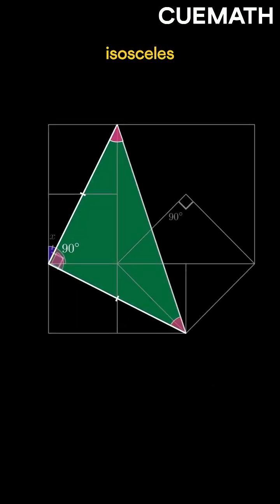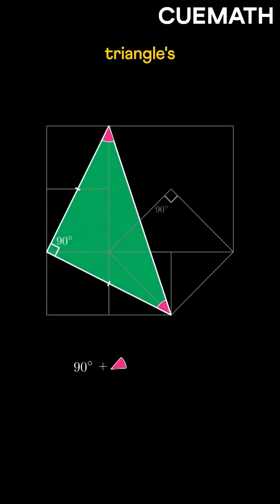Since the triangle's angles add up to 180 degrees and one is 90 degrees, the remaining two must be 45 degrees each.